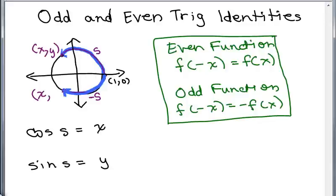What about the y coordinate? Up in quadrant 2, this y coordinate is positive, but down in quadrant 3, the y coordinate is below the x-axis — this is negative. So this is the ordered pair x, negative y.